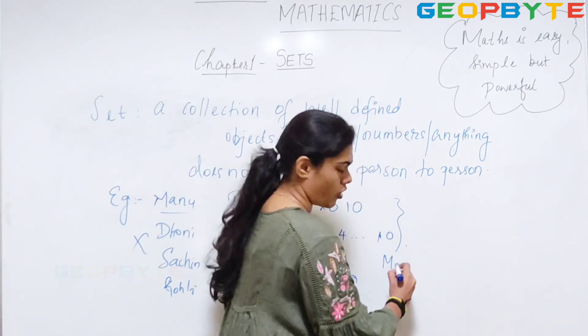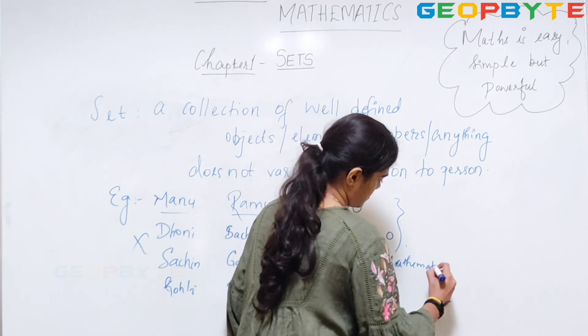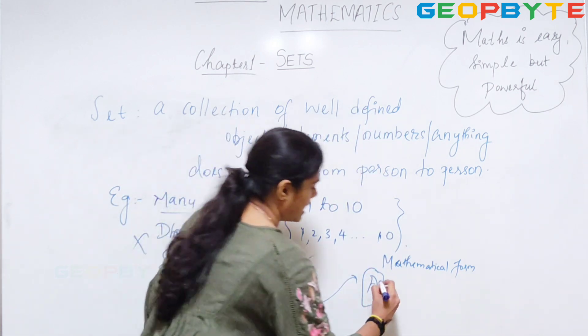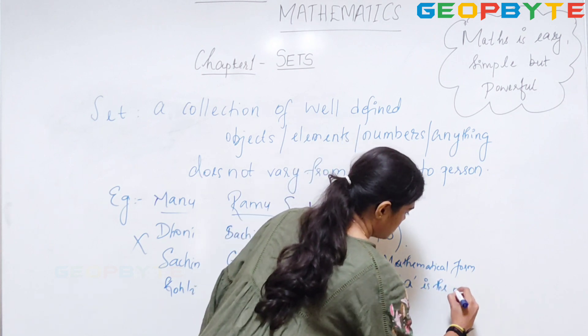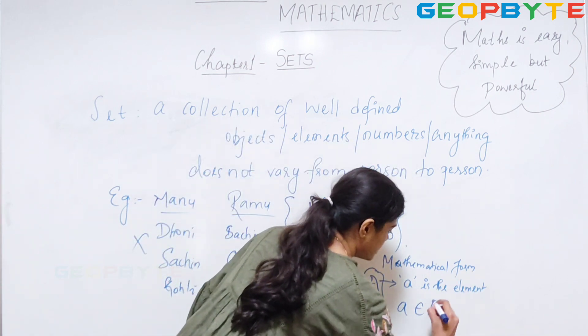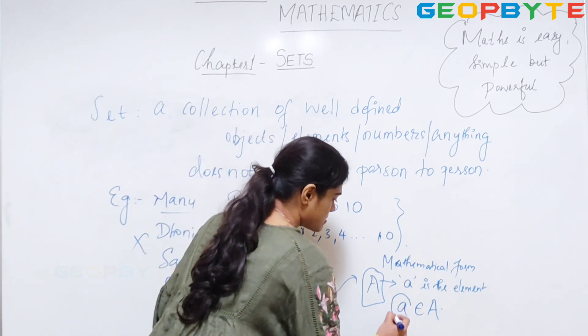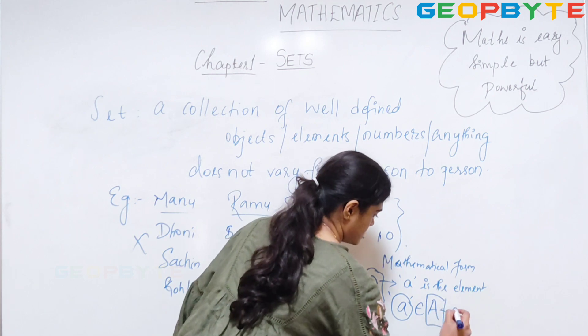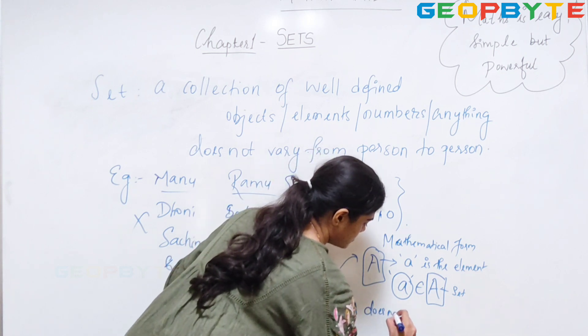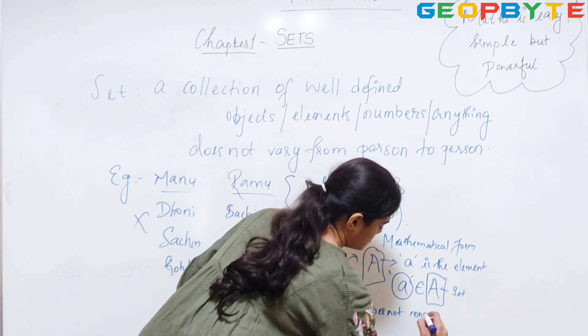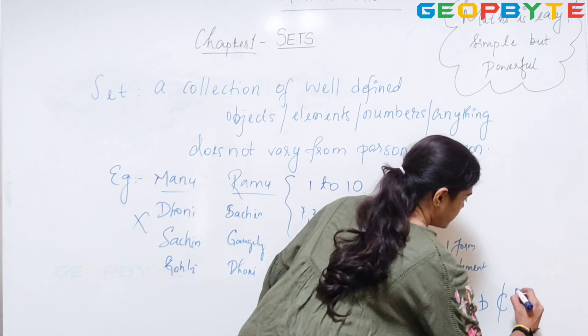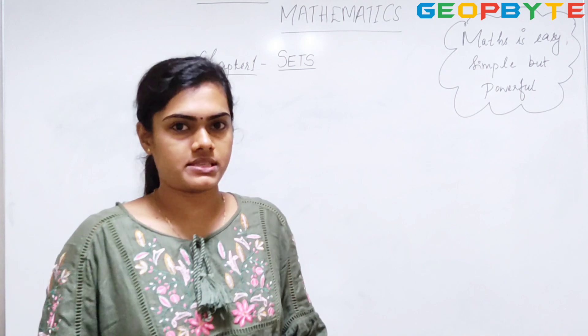How will I represent set in mathematical form? If A is my set and where small a is the element in the set, then I can write it as a element of capital A. That is, the small a is an element of capital A set. If A does not contain the element B, then I can write it as B not element of set A.